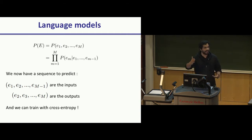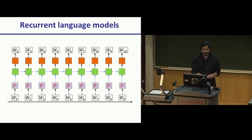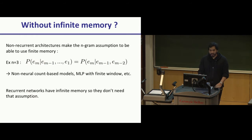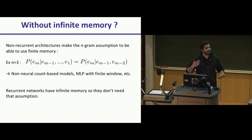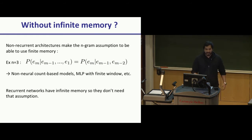As you've seen in Professor Biksha's lectures on RNNs, memory flows through the hidden state from one time step to the next. How do people do language models without this infinite memory? They make the n-gram assumption — the word at a specific time step is only dependent on n words that came before it. In a trigram, it's the three words before it. RNNs have infinite memory, so we don't need to make that assumption.